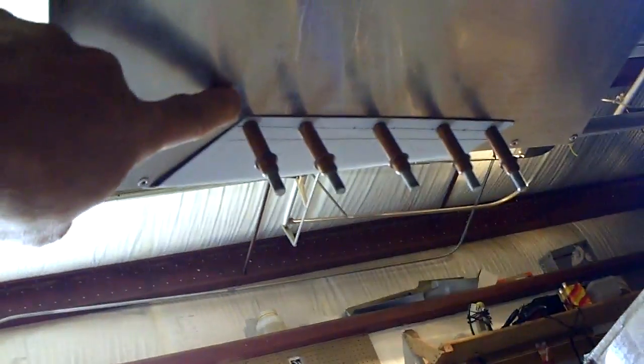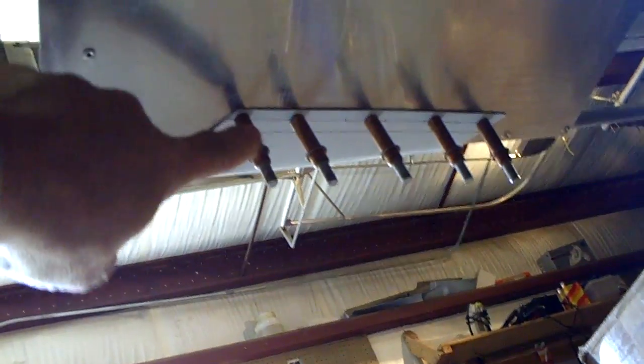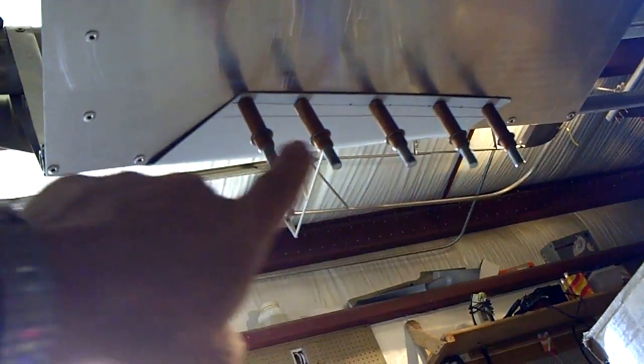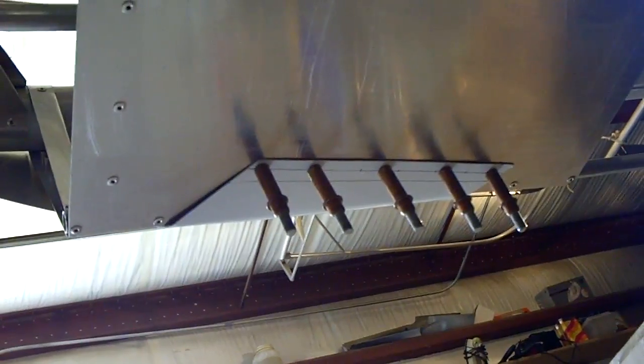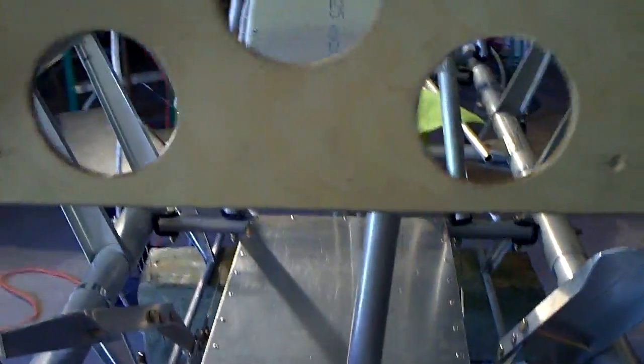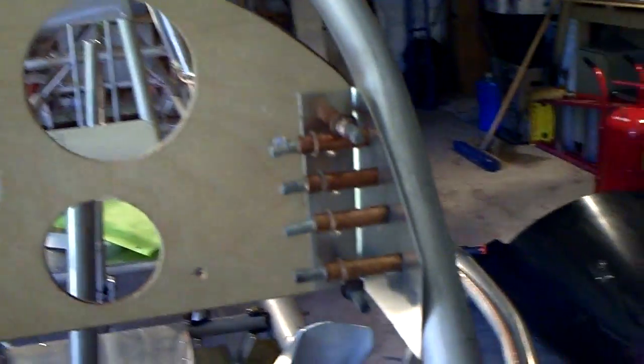And then again I made my edge distance about a quarter inch and evenly spaced out five holes for rivets to rivet this nose cone attach plate onto the airframe. Another thing I want to bring out is when I mounted my panel I made certain that,